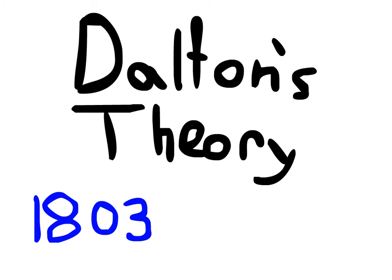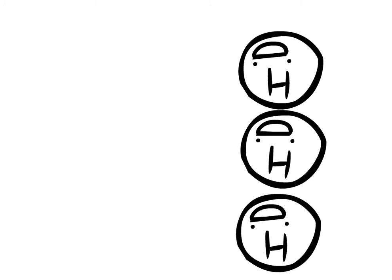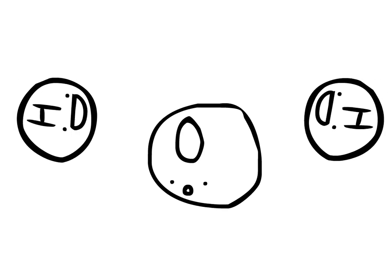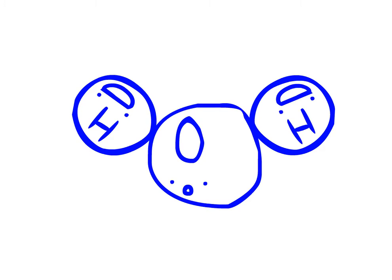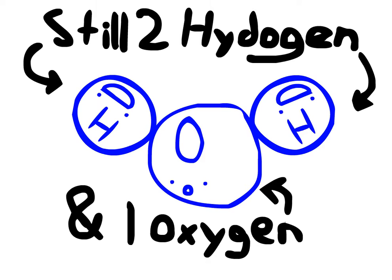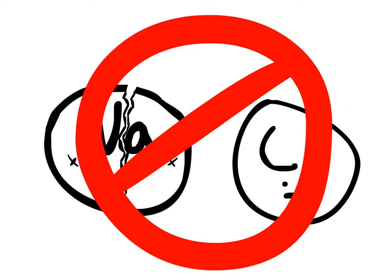John Dalton's Theory, 1803. Dalton was the first to come up with an atomic theory. In his theory, he had five main points: elements are made out of particles called atoms; all atoms of a specific element are identical; the atoms of one element are different from the atoms of another element; atoms of an element can combine with atoms of another element to make compounds; compounds have the same number and type of atoms from the elements it came from; and atoms cannot be destroyed or created in a chemical reaction — chemical reactions can only change the property of the atom.